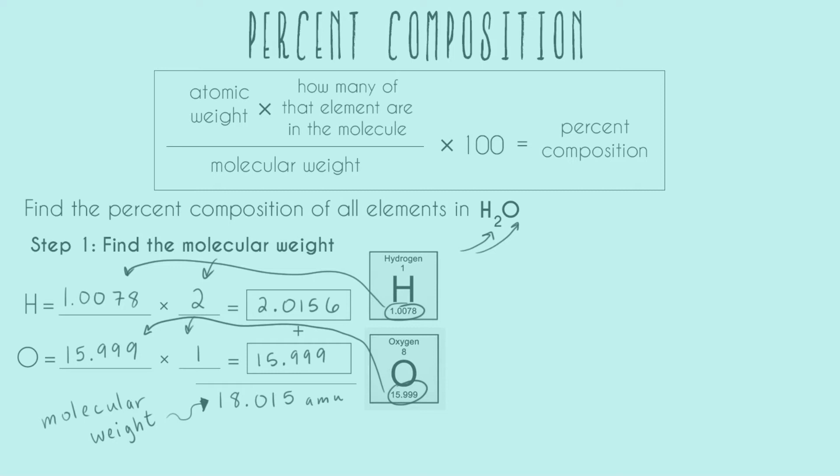After you add those together, I got a total of 18.015 AMU for my molecular weight. AMU stands for atomic mass unit, but you can also use grams per mole for these. I just happened to round to 5 sig figs. It depends on your problem to know how many sig figs you want to keep.